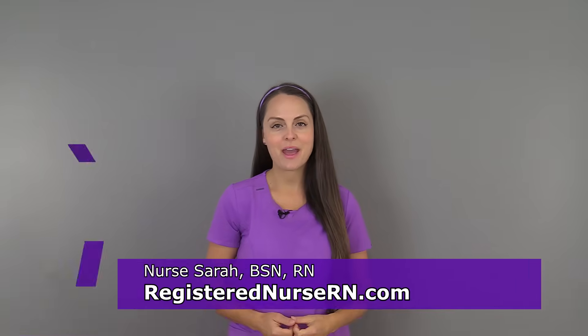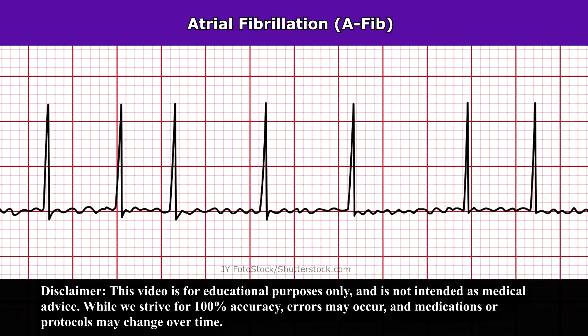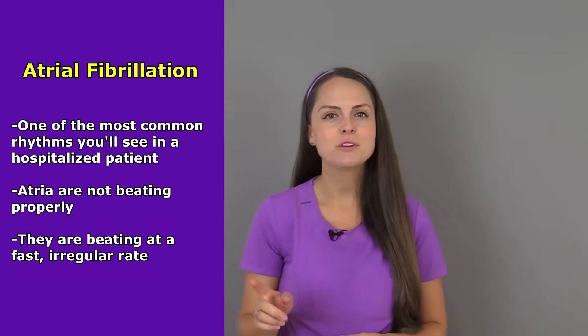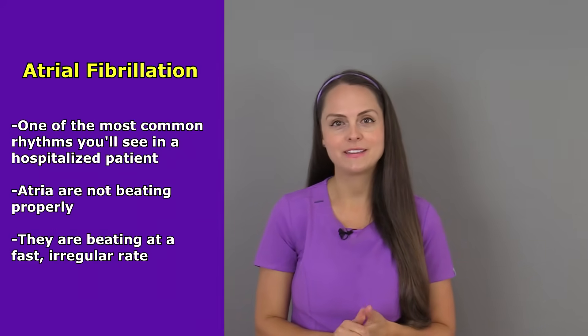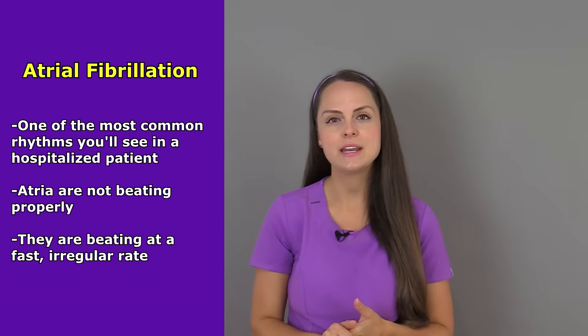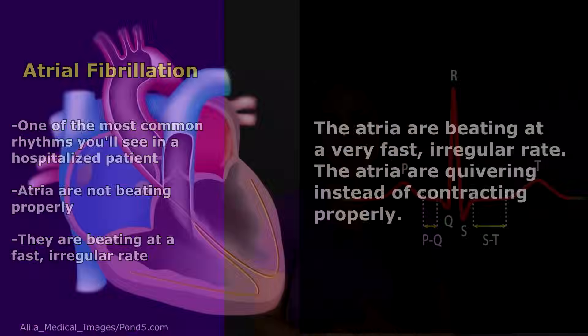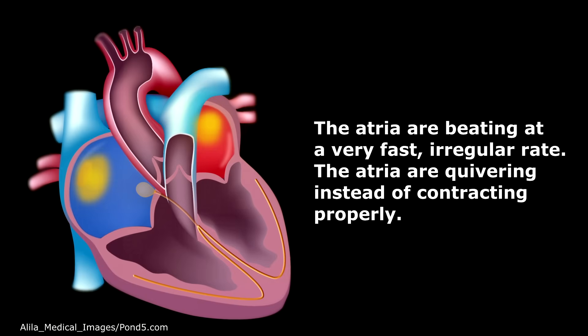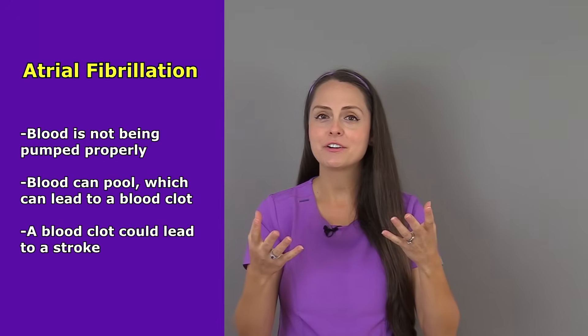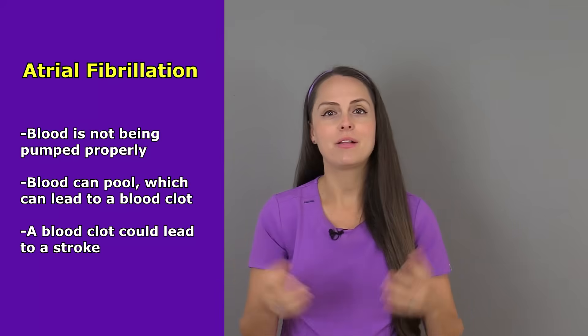In this review, I'm going to be talking about atrial fibrillation, also known as AFib. AFib is one of the most common rhythms you're going to see in a hospitalized patient. What's occurring with this rhythm is that the atria are not beating like they should. Instead, they're beating at a very fast, irregular rate — they're just quivering — and whenever they quiver, they don't pump blood very well.